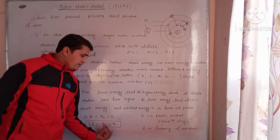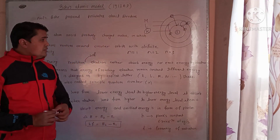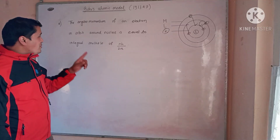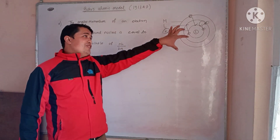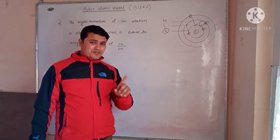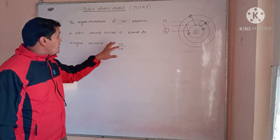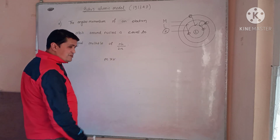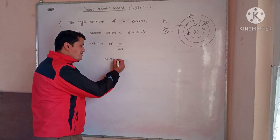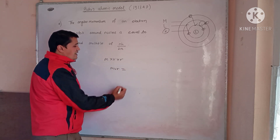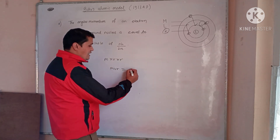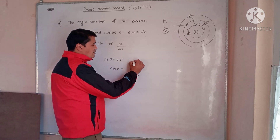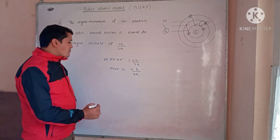The energy of a photon is given by Planck's constant multiplied by the frequency of radiation. Now for the next postulate: the angular momentum of electrons revolving around the nucleus must be equal to nh divided by 2π, where the angular momentum is mass times velocity times radius (mvr).